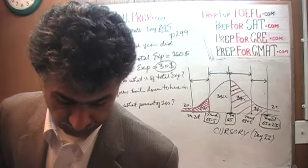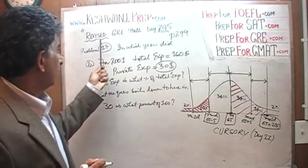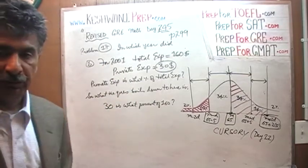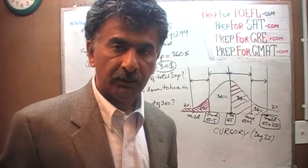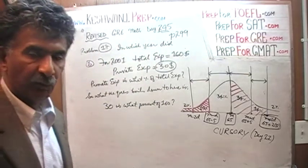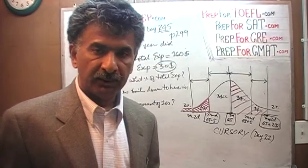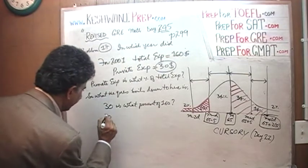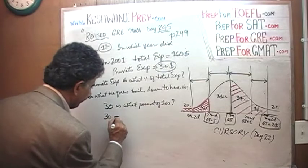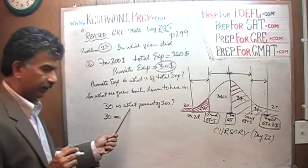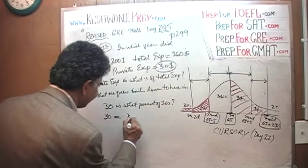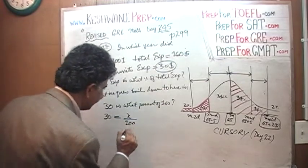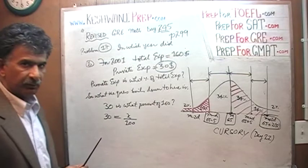And if you watch any of my percentage videos, and if you have not, just type in revised GRE or just GRE and put in percentage problem, it will pop right up and you will see several percentage problems where we go through this routine as to how to convert the word problem into proper equation. And this is how we do it. 30 is means equal. There are four words that we have to translate: is, what is replaced by the unknown, which is X. Percent means over 100.